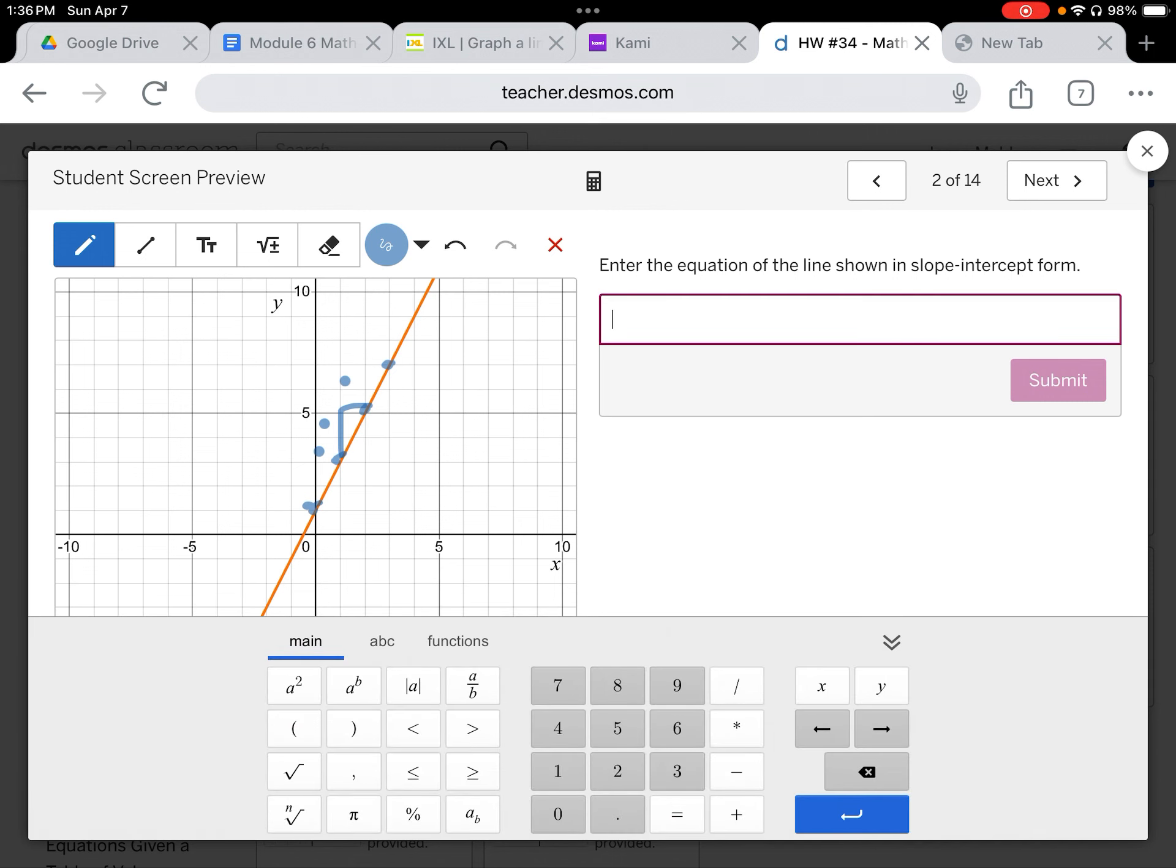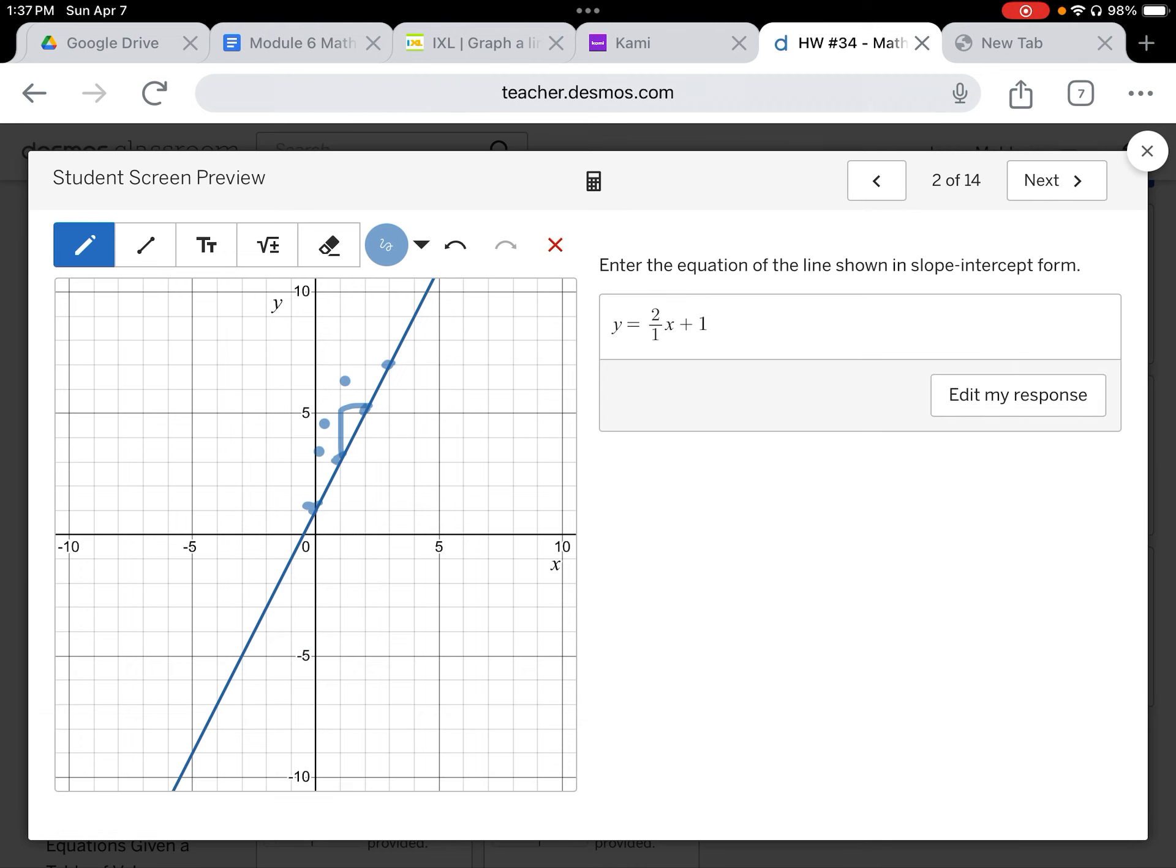So here we go. Our equation is y equals rise two over a run of one x. We could also just make that 2x without the one on the bottom. It doesn't matter. And then plus, and the y-intercept at the very beginning, we said it was one. It crosses the y-axis at one. That was slide two. Positive slope and also, coincidentally, a positive y-intercept.